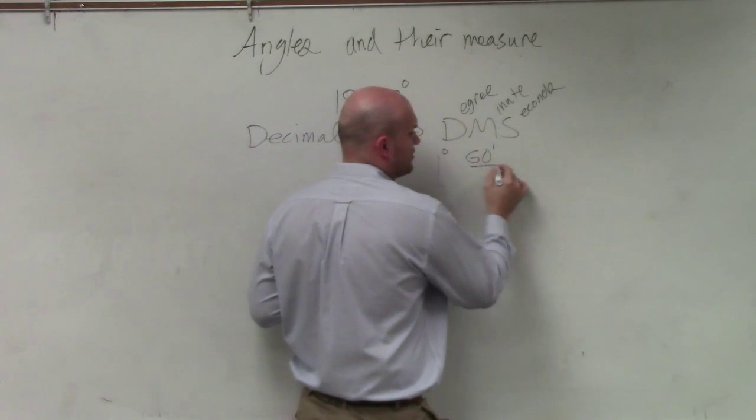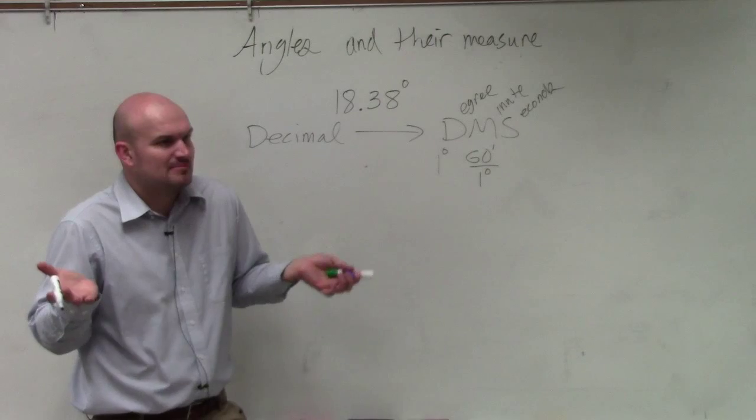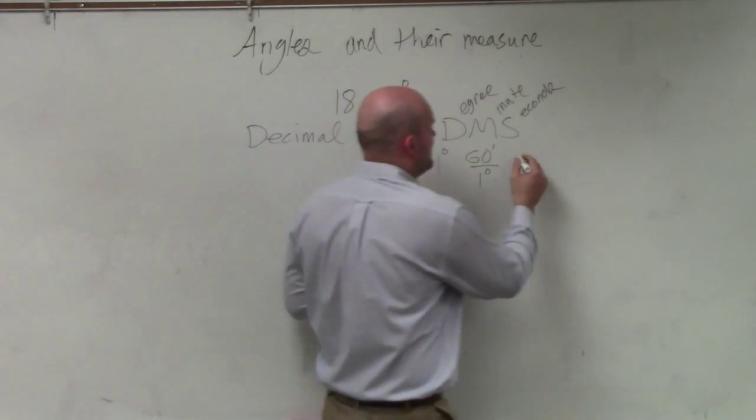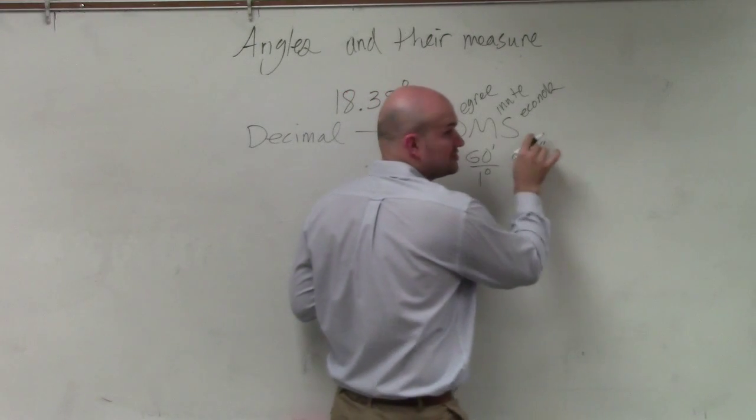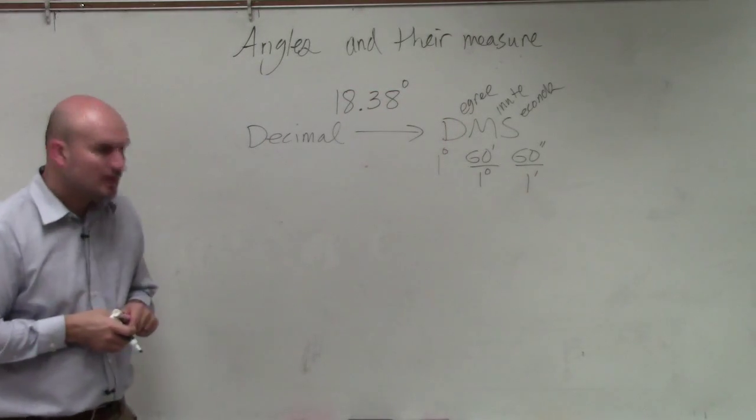60 minutes is equivalent to one degree. Just think of time. 60 minutes and one degree. And then there's 60 seconds in one minute. Agree? Okay.